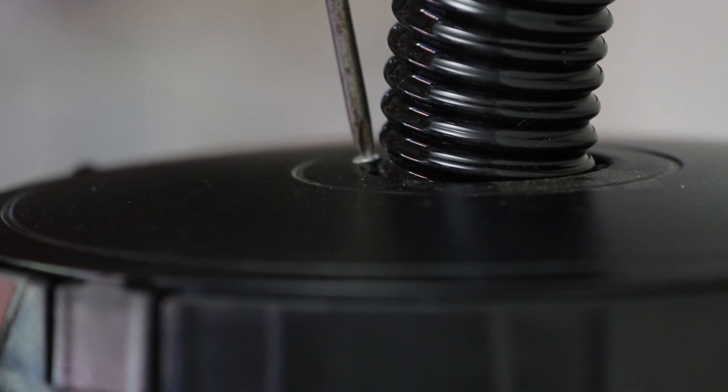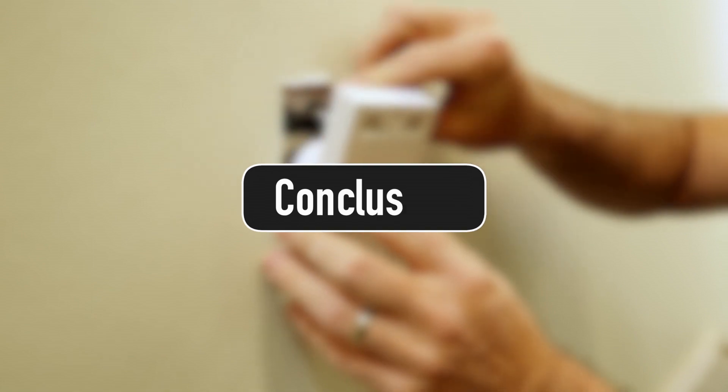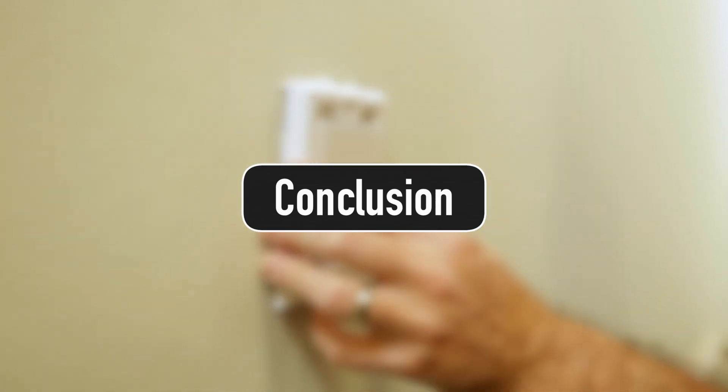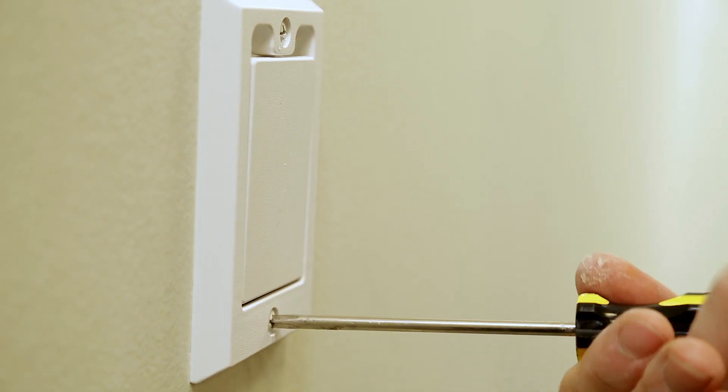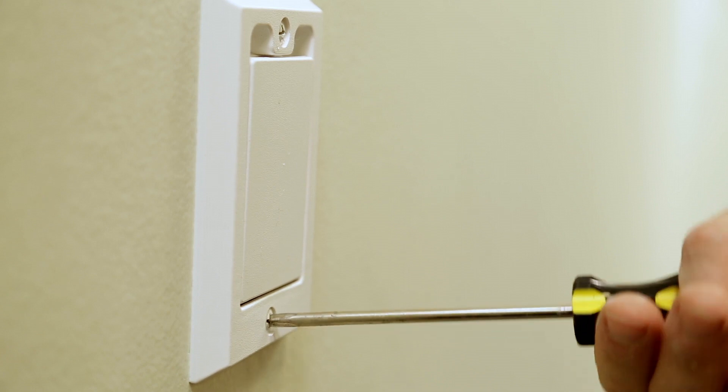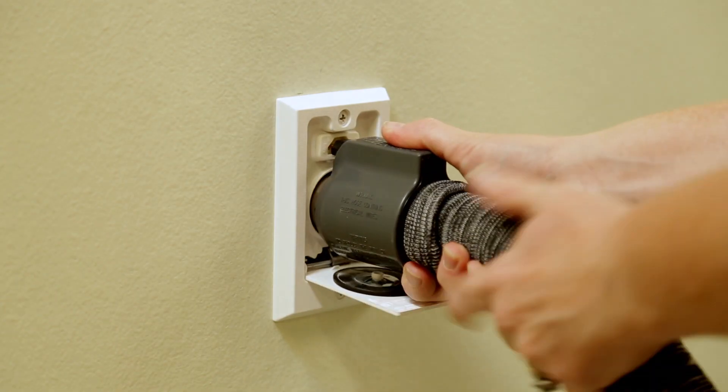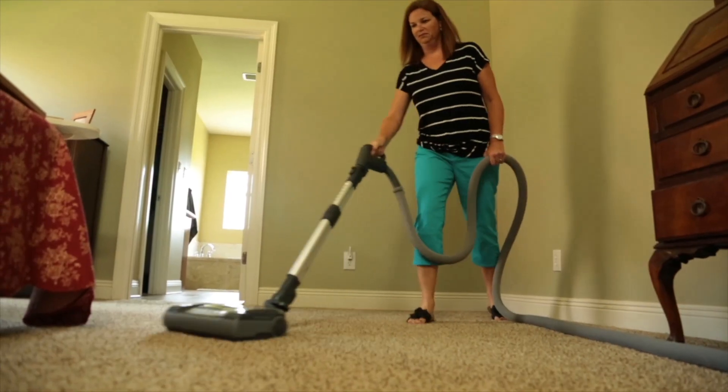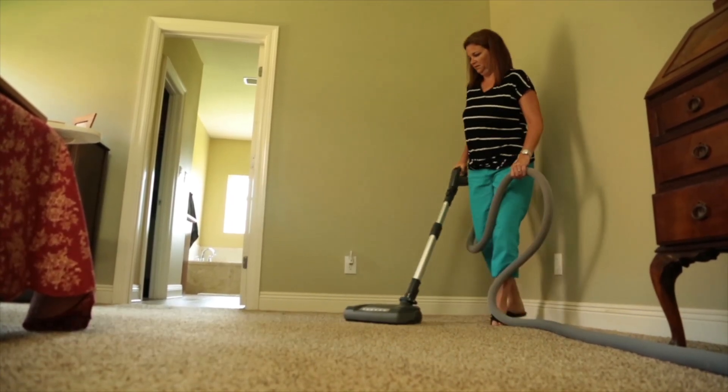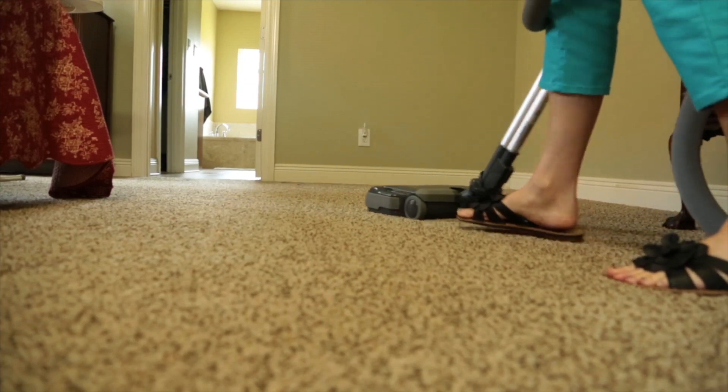Once the construction of the home is completed and the inlet faceplates and power unit are installed, you are ready to use your central vacuum system. Simply open an inlet cover and insert your hose to turn on the system and enjoy quiet, powerful cleaning with your NuTone Pure Power central vacuum.